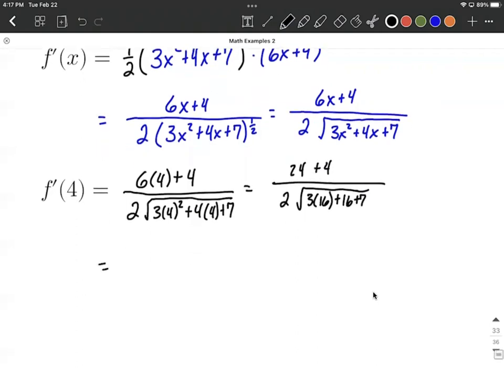All right, from here I'm going to go ahead and say 24 plus 4 makes 28 in our numerator. And then we have our 2 in our denominator. And the square root of 3 times 16 plus 16 plus 7 works out to be 71.